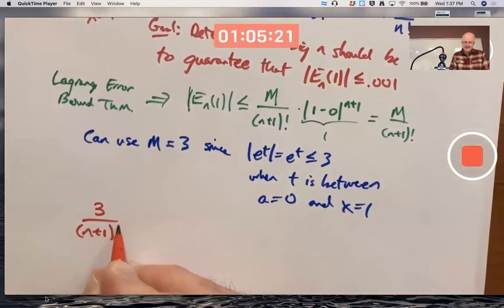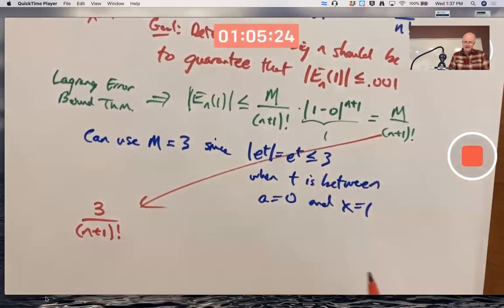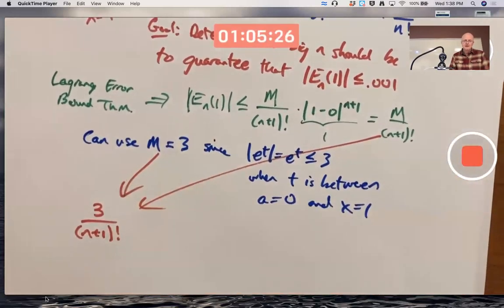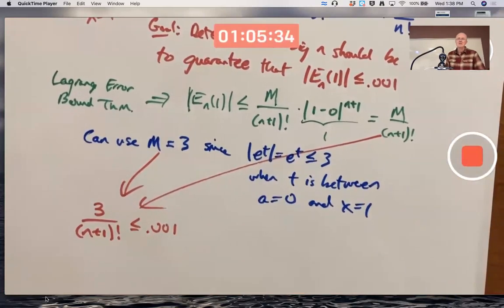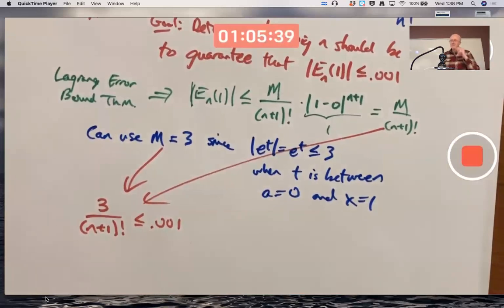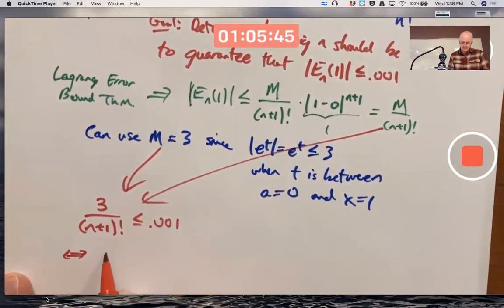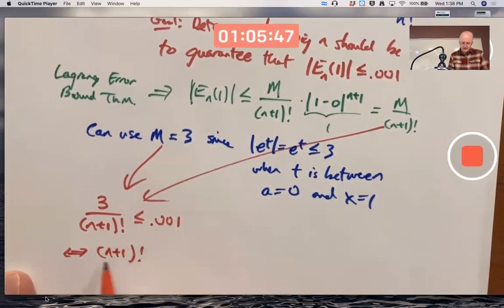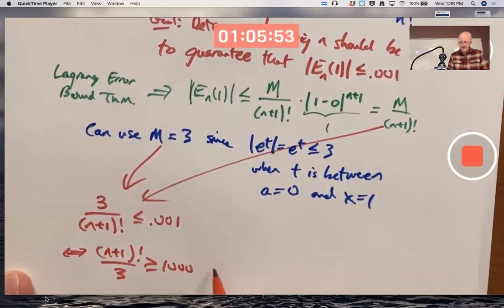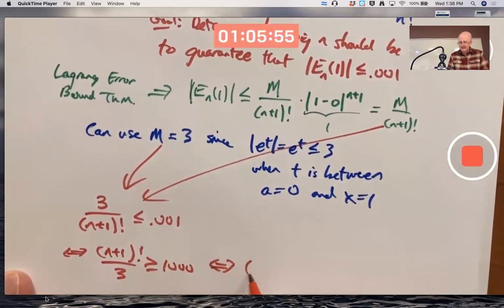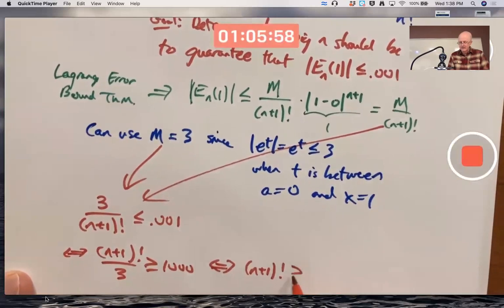Again, my goal is to make that thing less than or equal to 0.001. Solve that inequality for n. How? Trial and error is good enough. Maybe it's simpler to think about if you flip the fractions. Though if you do so, the inequality changes direction. You're looking for a value of n, the smallest positive integer value of n, so that n plus 1 factorial is greater than or equal to 3,000.